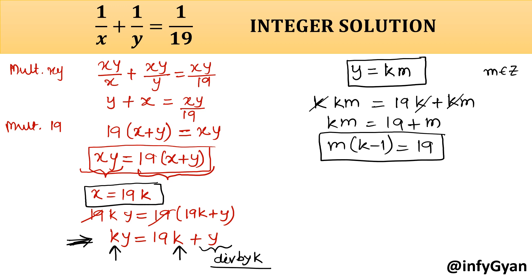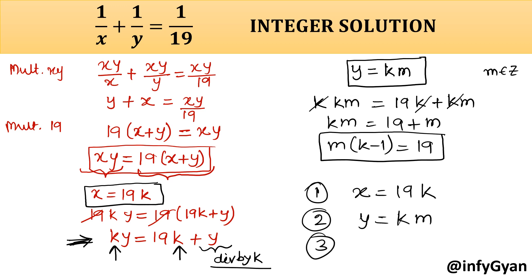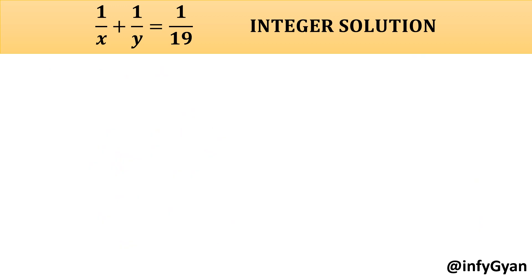We now have three equations. Equation 1: x is equal to 19k. Equation 2: y is equal to km. And equation 3: m times k minus 1 is equal to 19. With the help of all three equations, we will find the solution.